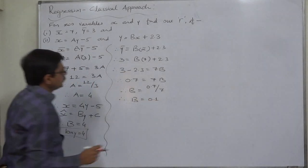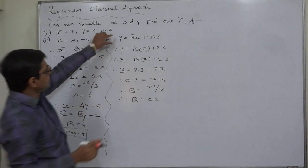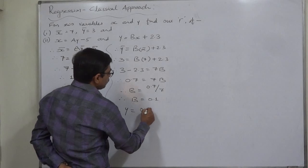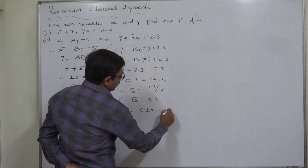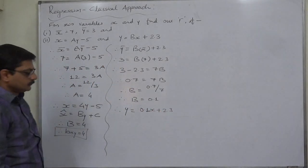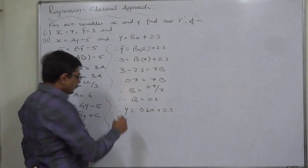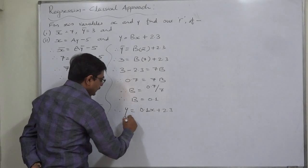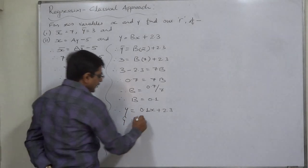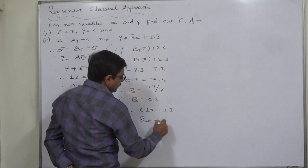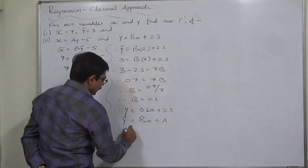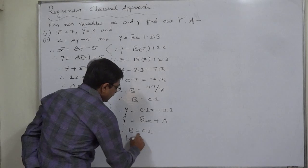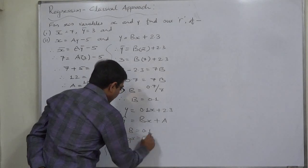Let's substitute b in the equation. Therefore, y equals to 0.1x plus 2.3. Now let's find out byx from this equation by comparing it with its standard form y-cap equals to bx plus a. Therefore, the coefficient b here is byx, because this is the line of regression of y on x. So byx equals to 0.1.